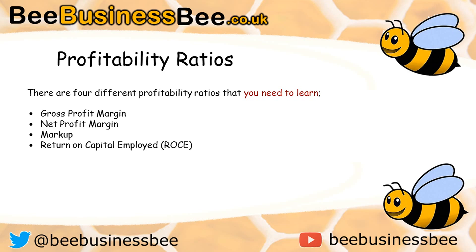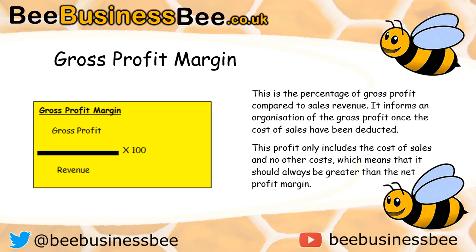Let's start by looking at the gross profit margin. The formula is gross profit divided by revenue times 100. That shows the percentage of profit compared to sales revenue and informs an organisation of the gross profit once all the cost of sales have been deducted. This profit only includes the cost of sales and no other operating costs, which means it's always going to be greater than the net profit margin. Gross profit is calculated as revenue minus cost of sales.